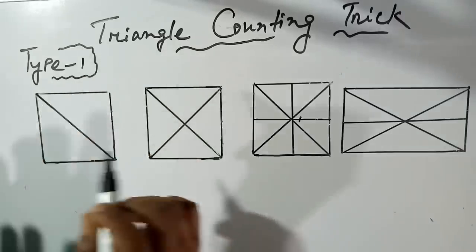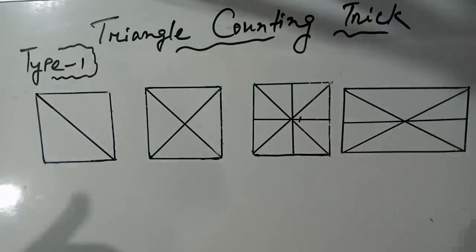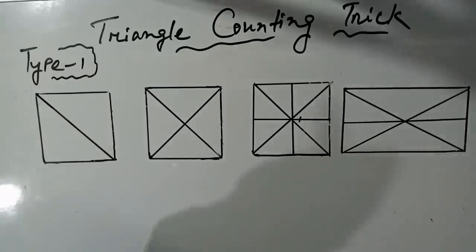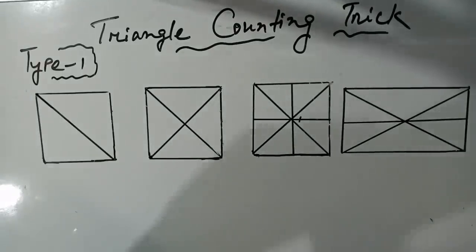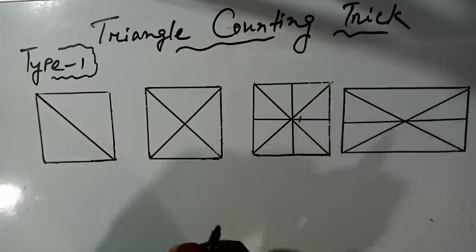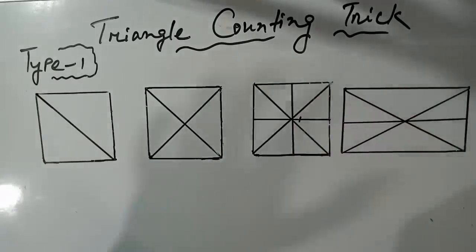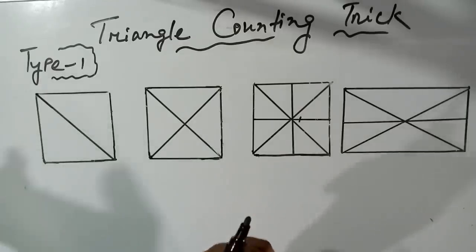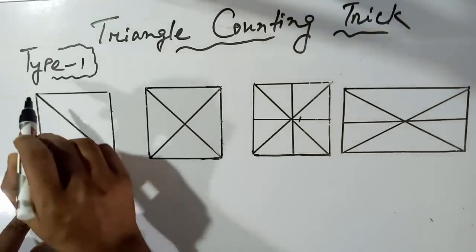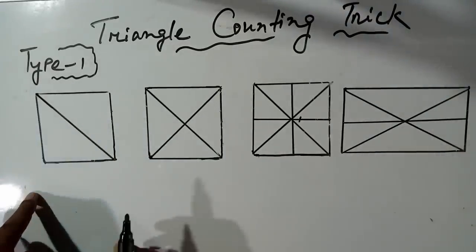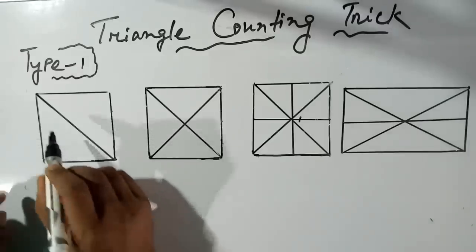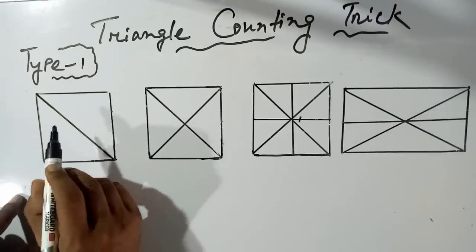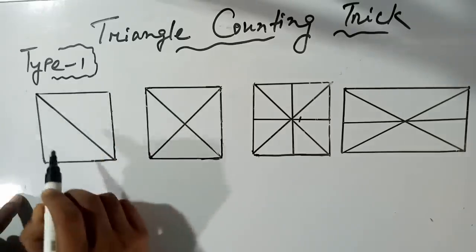I will write Type 1, a type of diagram — triangles and triangle counting tricks. What are the different things? I will write a type of triangle. This is the square or rectangle.